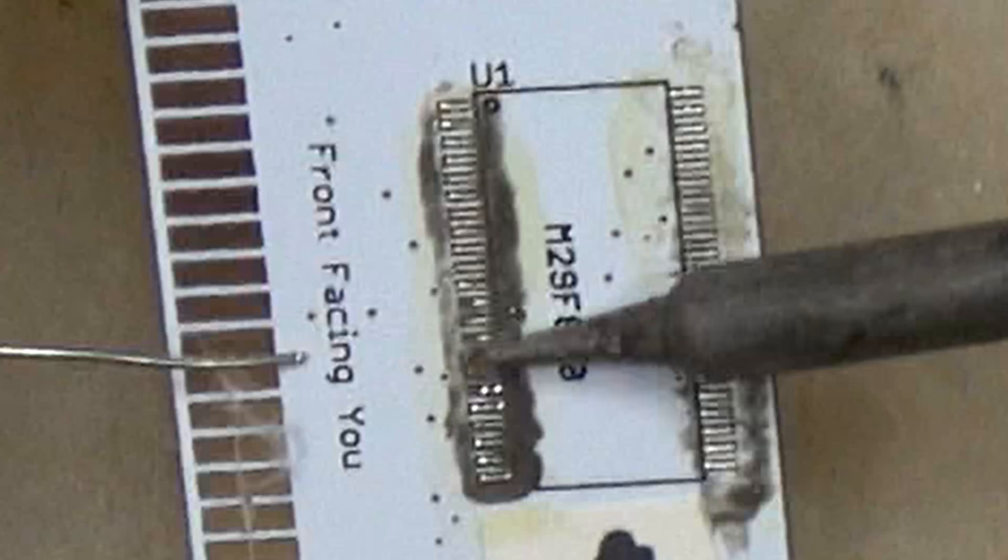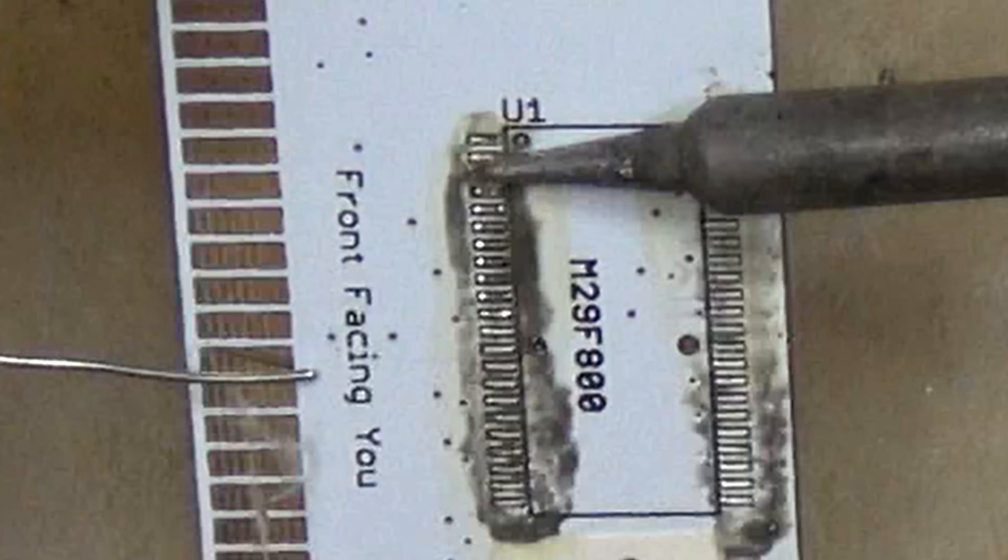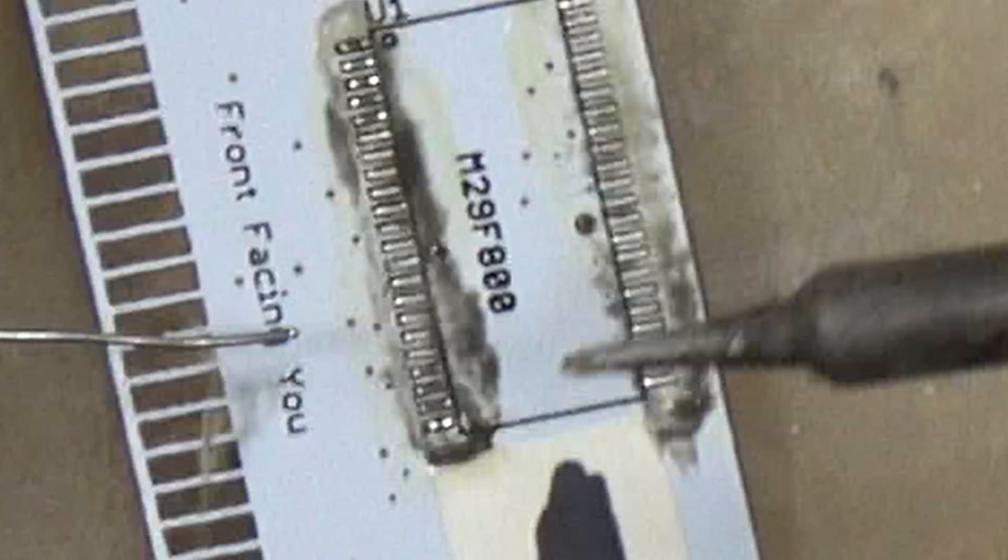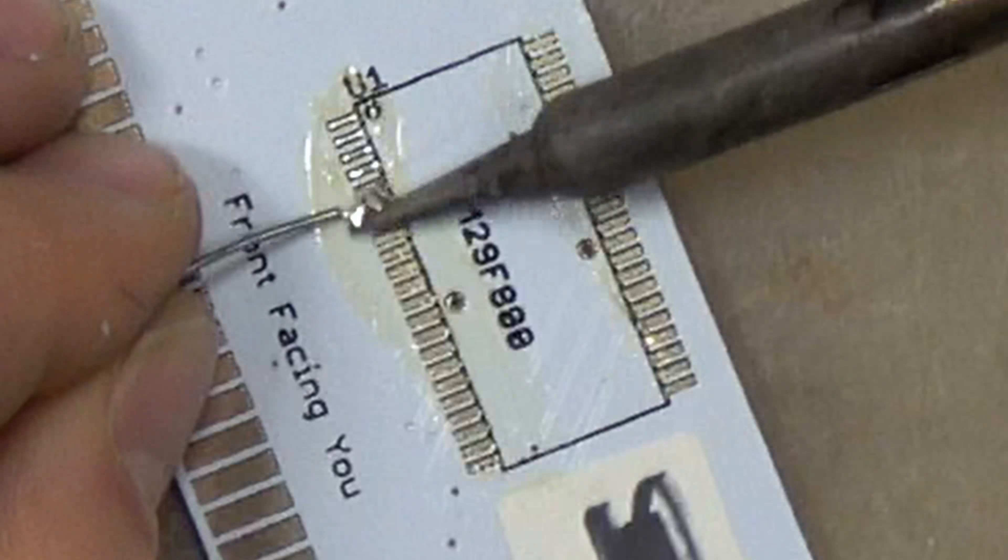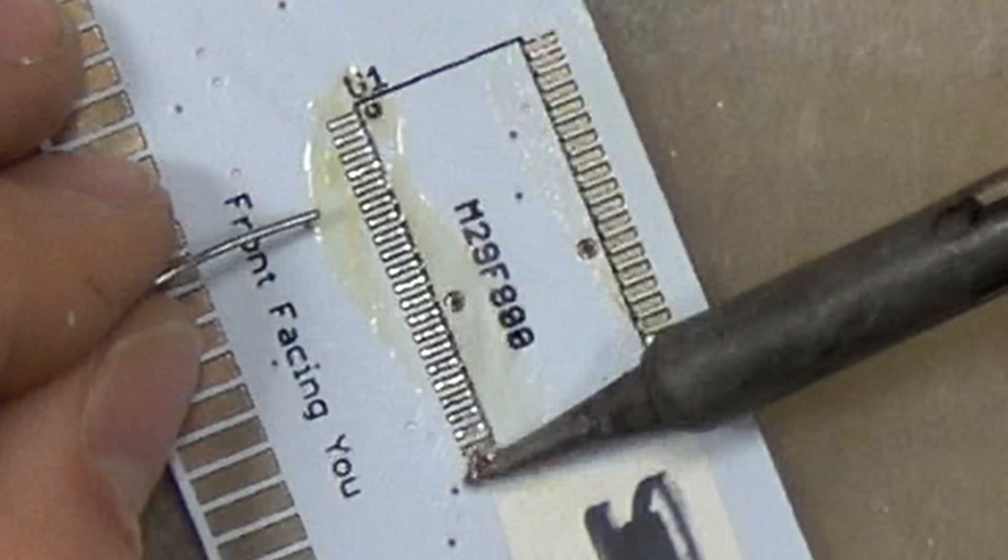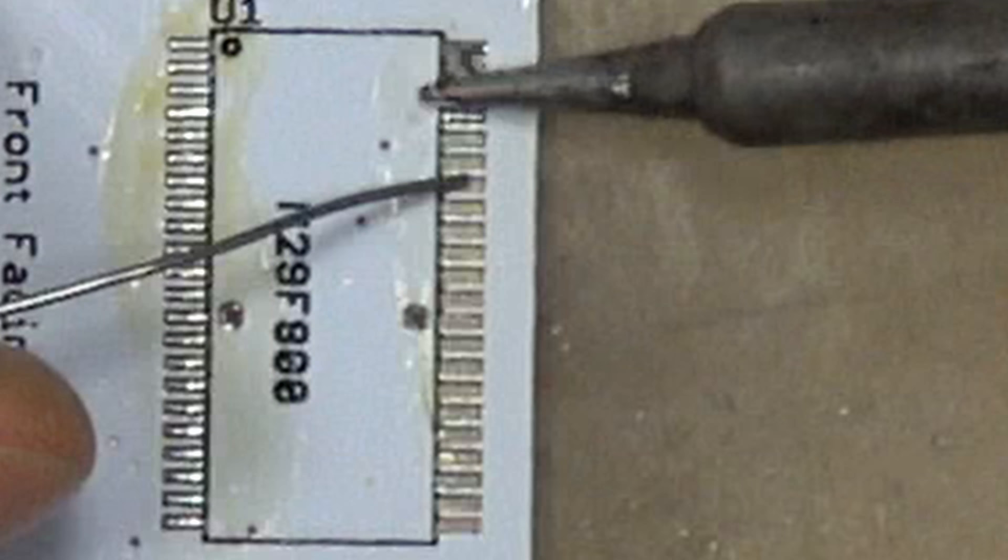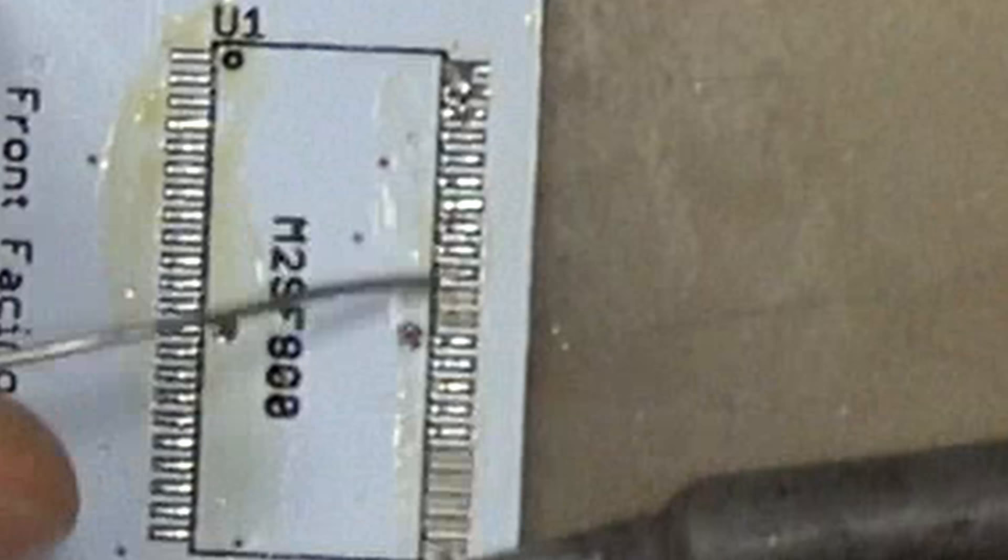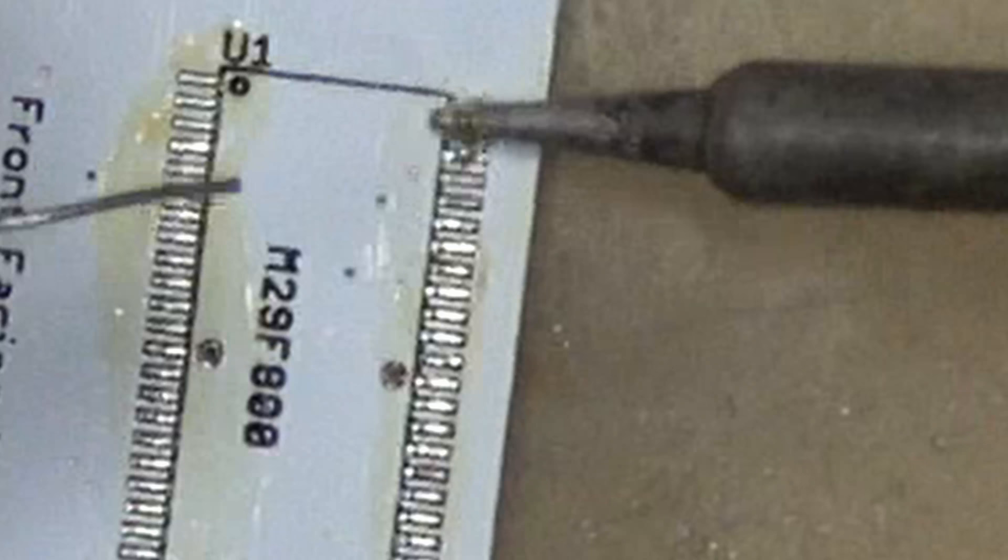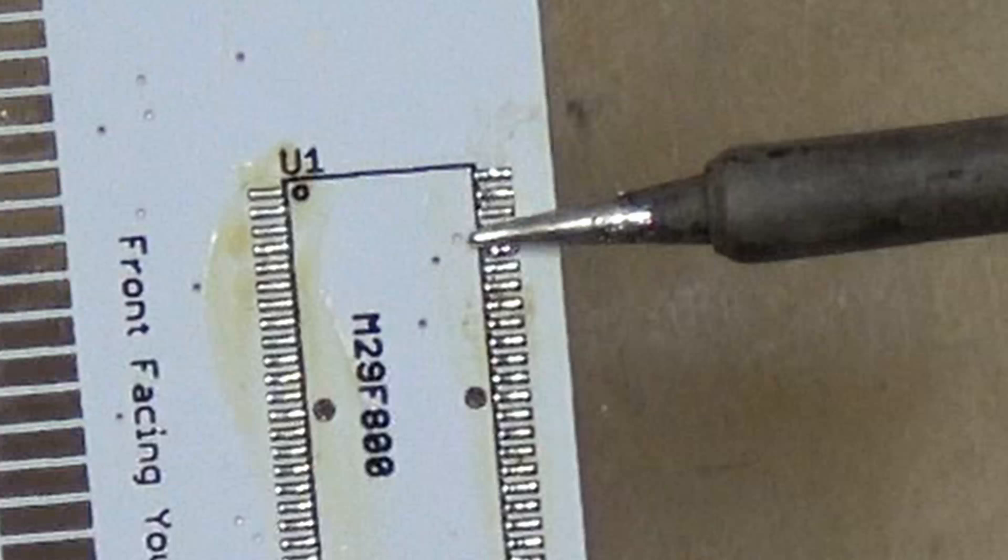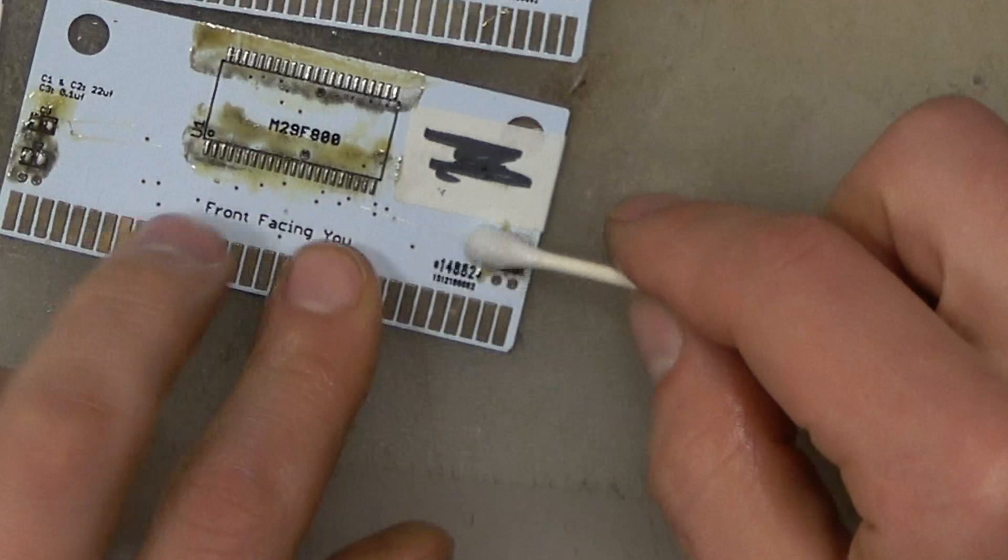We're gonna clean up the excess solder paste and flux, but before that I'm also going to show you what it looks like to tin with regular solder. You do the same thing with regular solder and for this you would absolutely need the flux. We have one bridge connection and we're just going to wipe that away.